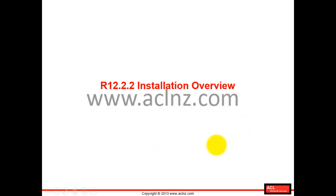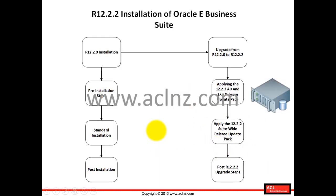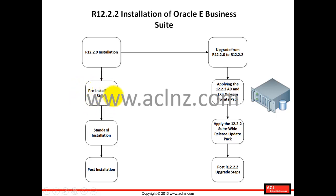The entire installation is divided into two parts — it happens in two phases. The first thing you've got to do is start by installing release 12.2.0. As part of that installation, you've got to do a number of pre-installation steps. Then you go and actually run the standard installation using the Rapid Install Wizard.